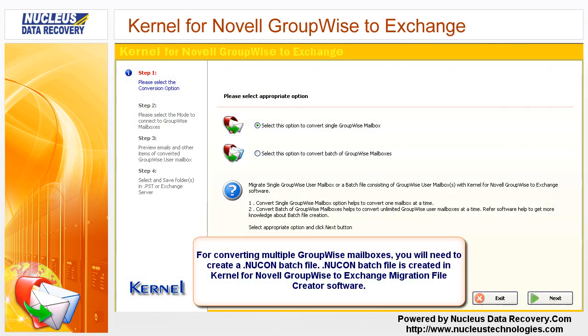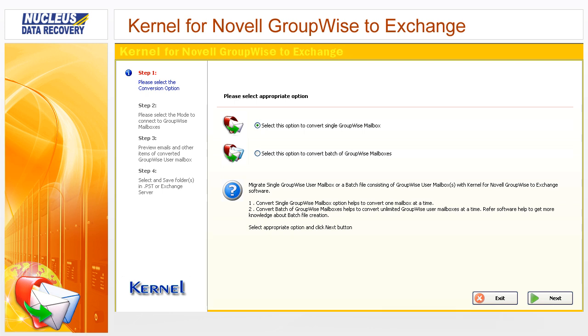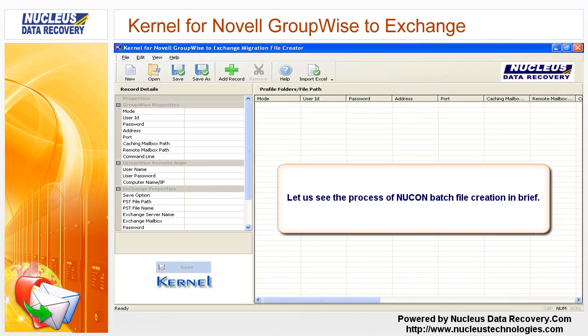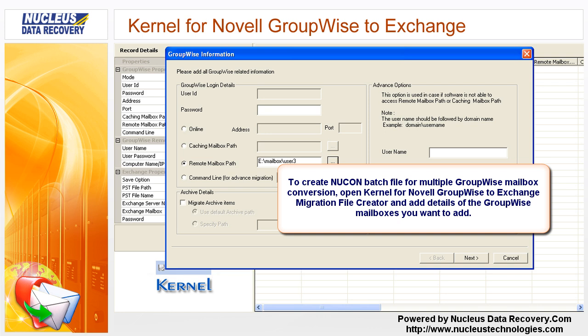For converting multiple GroupWise mailboxes, you will need to create a Nukon batch file. The Nukon batch file is created in the Kernel for Novel GroupWise to Exchange Migration File Creator software, which gets automatically installed with Kernel for Novel GroupWise to Exchange. To create a Nukon batch file, open the Migration File Creator and add the details of the GroupWise mailboxes you want to add.